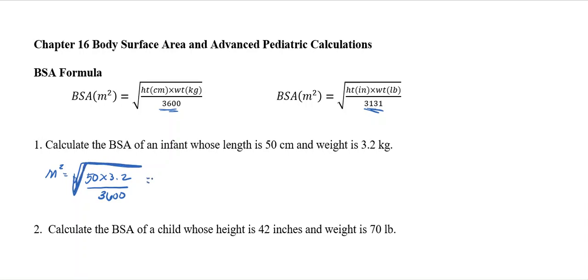So 50 times 3.2, I'm going to calculate that, and I get 160. Divide that by 3,600. We're still under the square root. So 160 divided by 3,600, and I get the square root of 0.0444 repeating.